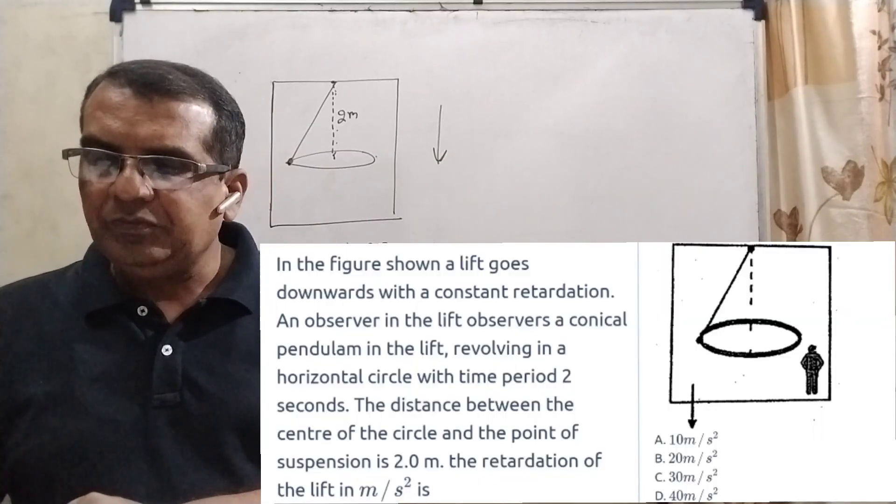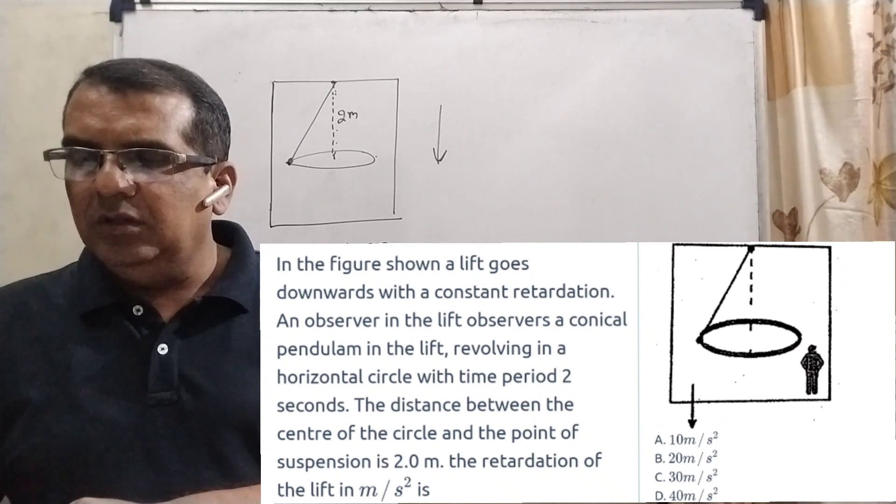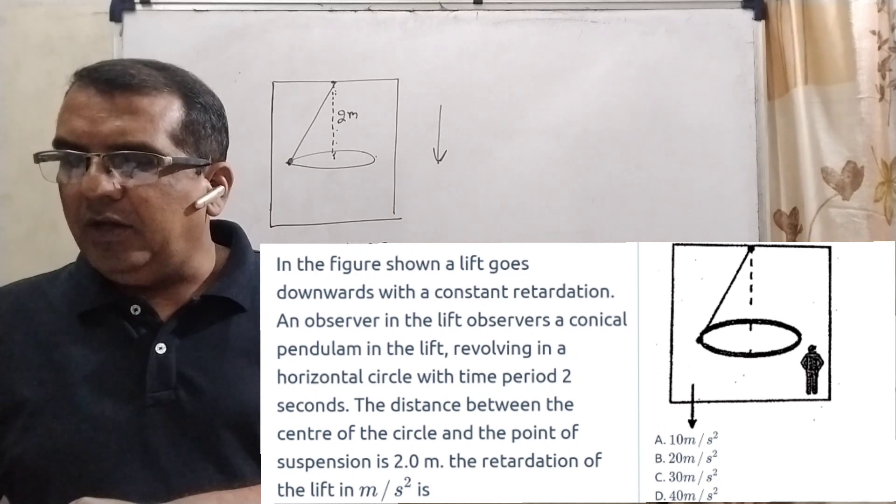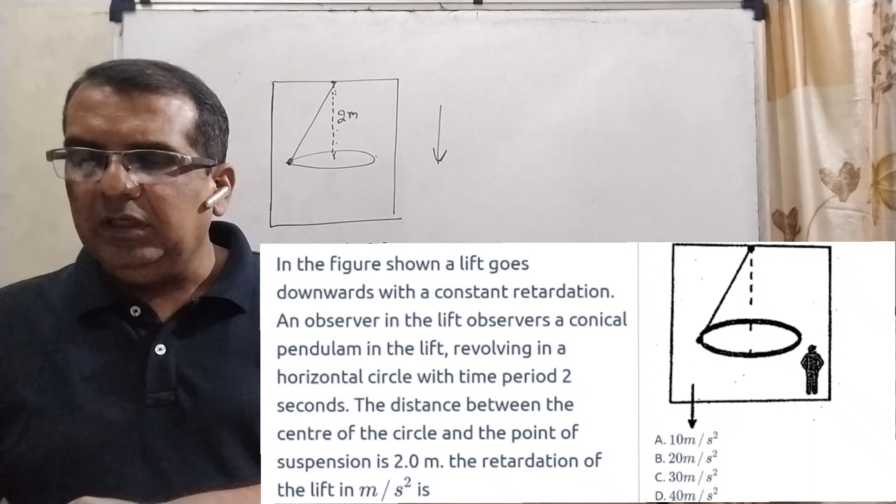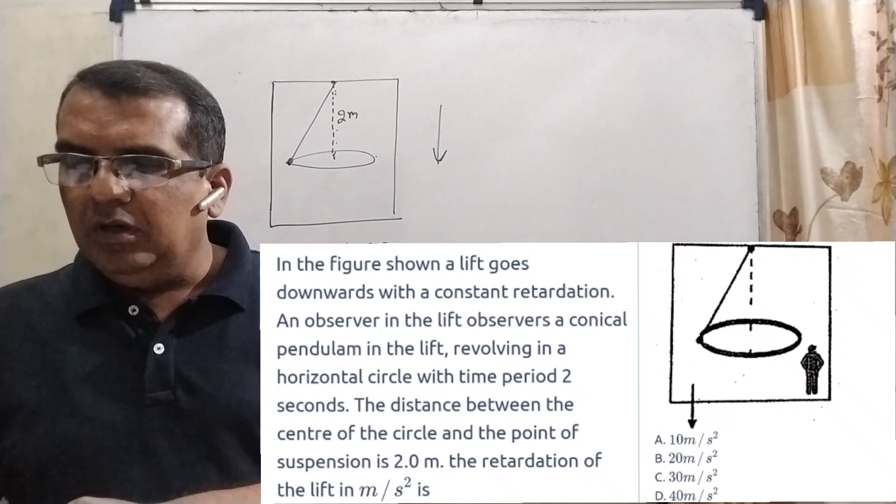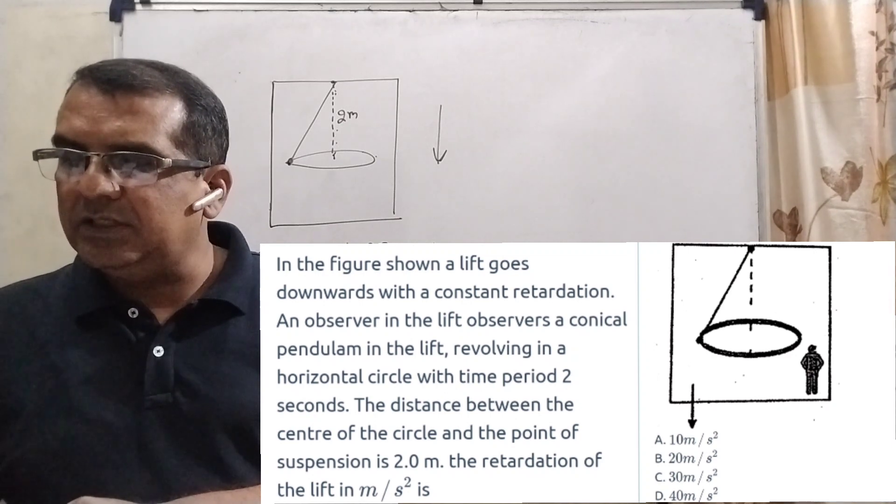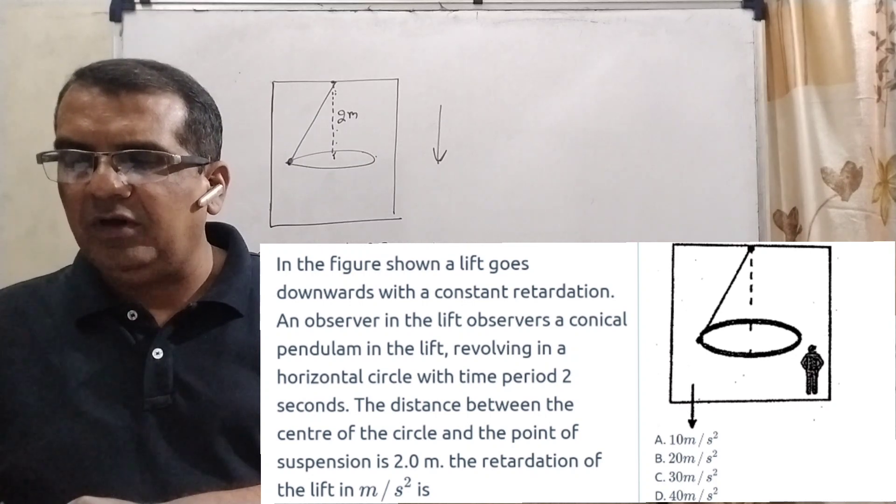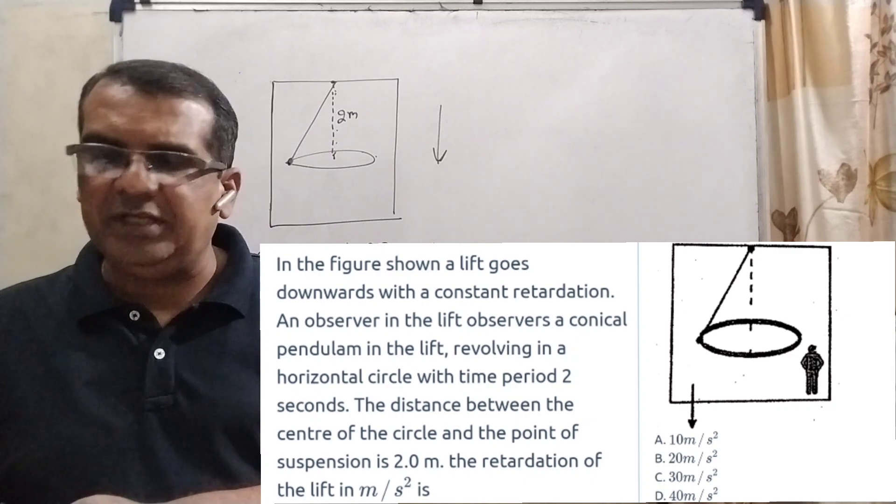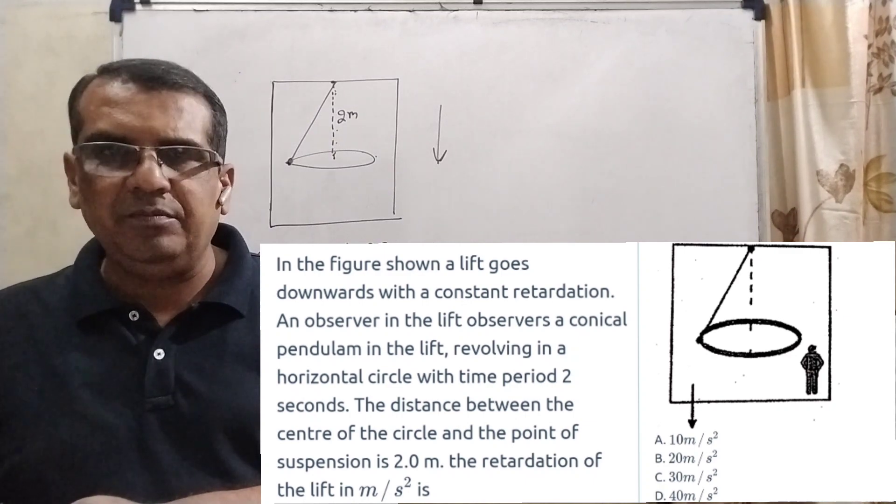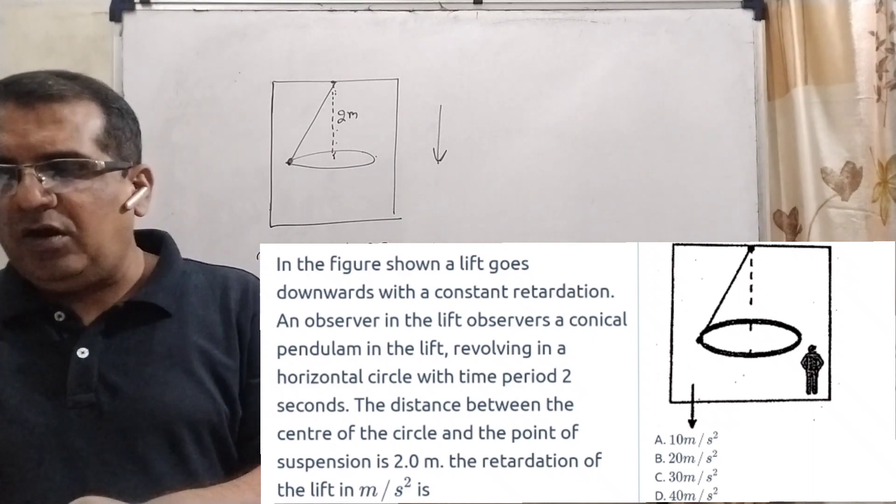Now here is the question. In the figure shown, a lift goes downwards with a constant retardation. An observer in the lift observes a conical pendulum in the lift, revolving in a horizontal circle with time period 2 seconds. The distance between the center of the circle and the point of suspension is 2 meters. Find the retardation of the lift in meter per second square. Here we have given pi square can be written as 10 and G can be put here 10 meter per second square.